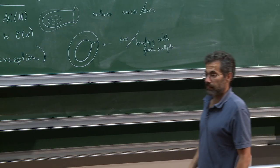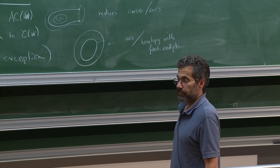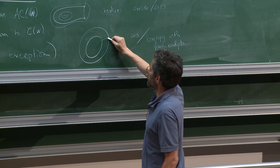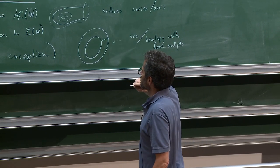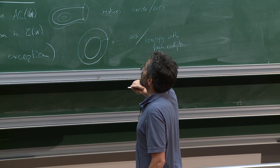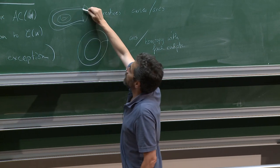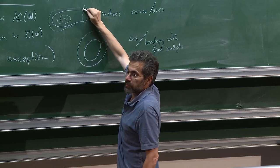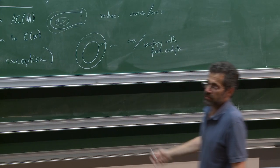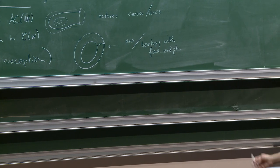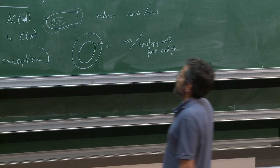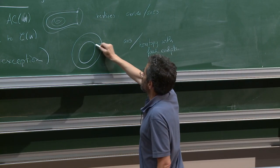Student question: Are those orthogonal at the boundary by definition? Reply: Orthogonal to the boundary? No — there's no metric. It's just a topological picture, so there's no orthogonality. It's just topological.